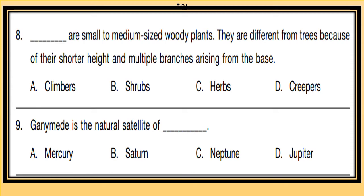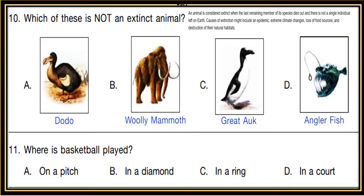Question 9: Ganymede is the natural satellite of which planet? Options include Mercury, Saturn, Neptune, or Jupiter. Question 10: Which of these is NOT an extinct animal? An animal is considered extinct when the last remaining member of its species dies. Options are dodo, woolly mammoth, mammoth, great auk, or anglerfish.